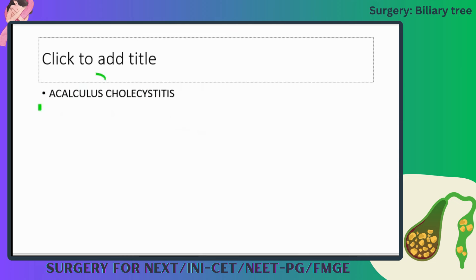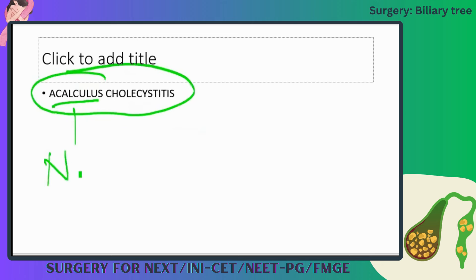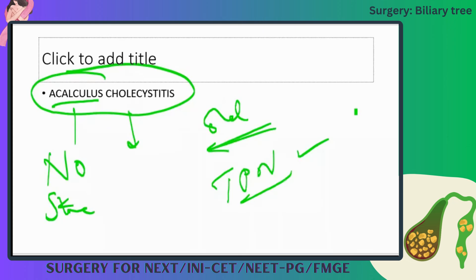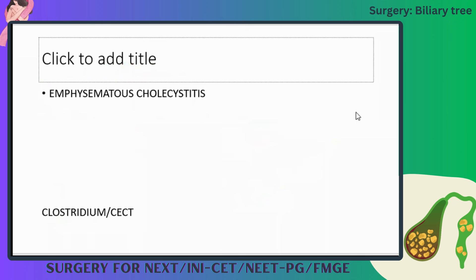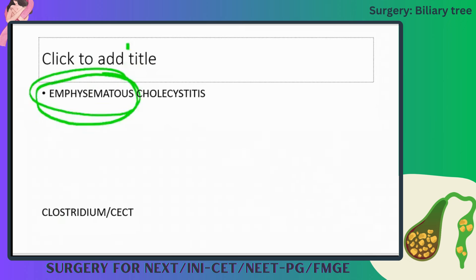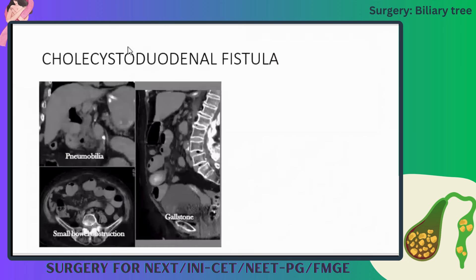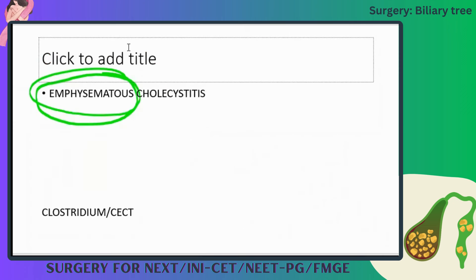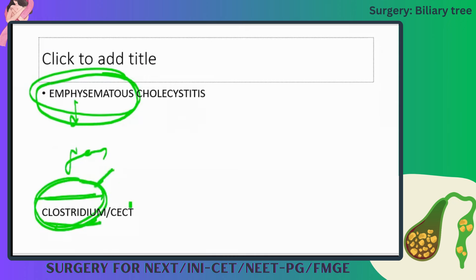Acalculous cholecystitis — the name indicates there is no stone (calculus), only gallbladder infection and inflammation. It is seen in elderly patients on total parenteral nutrition (TPN). Emphysematous cholecystitis is caused by Clostridium, and the investigation of choice is CECT.